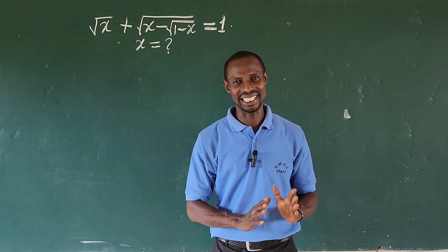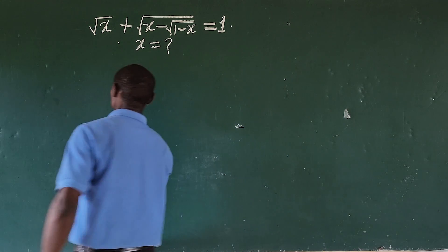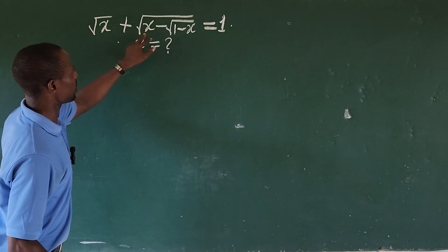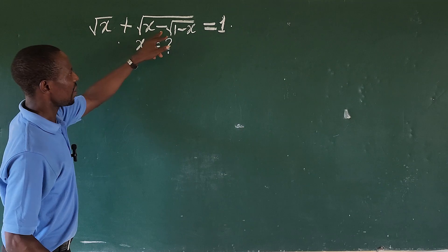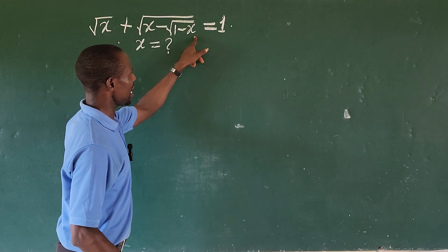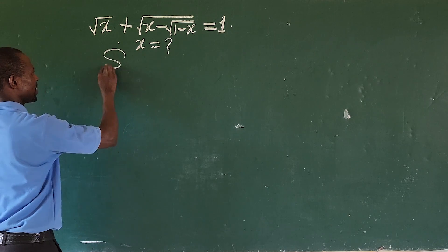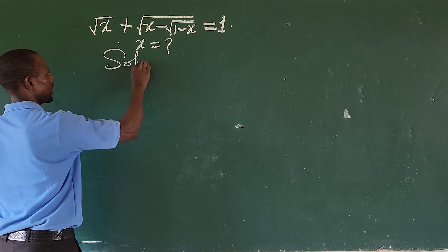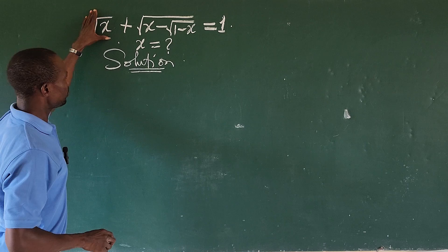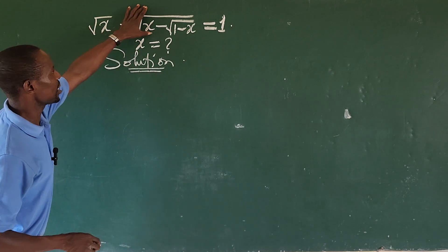Let's go into today's challenge. The question says: the square root of x, plus the square root of x, minus the square root of 1 minus x, equals 1. We need to find the value of x. I'll move terms around to work with this.